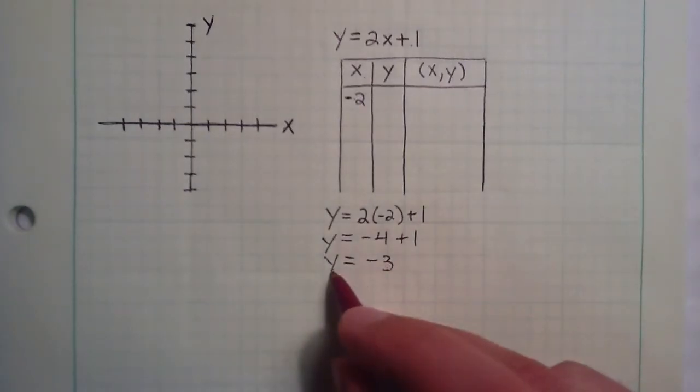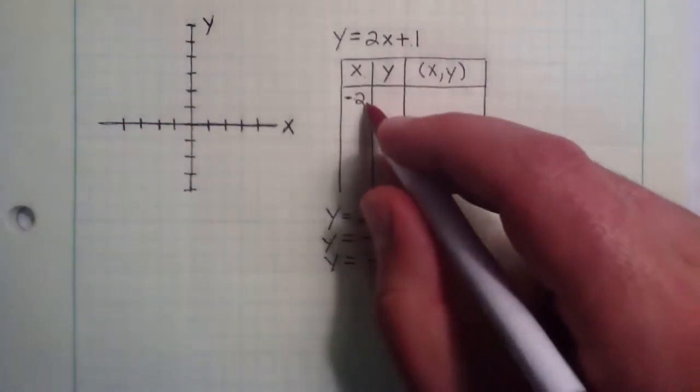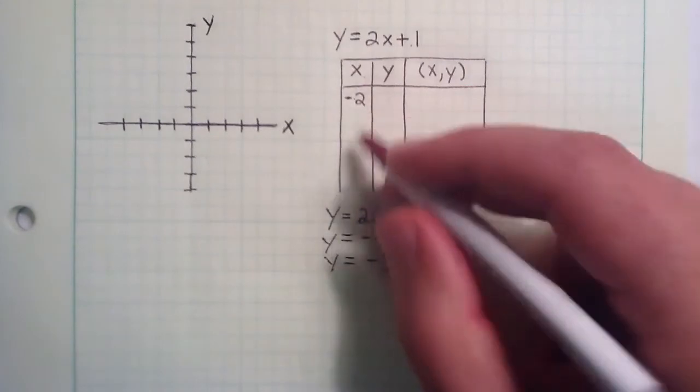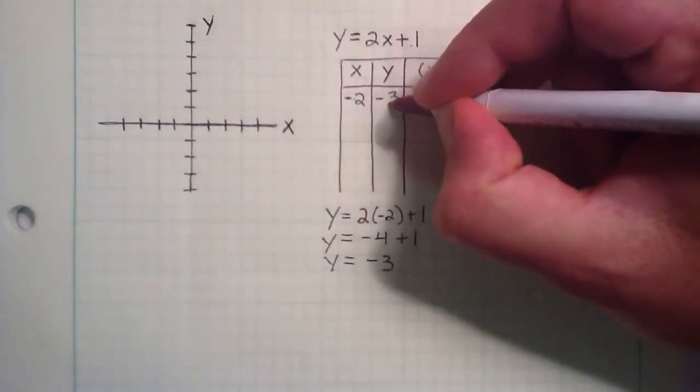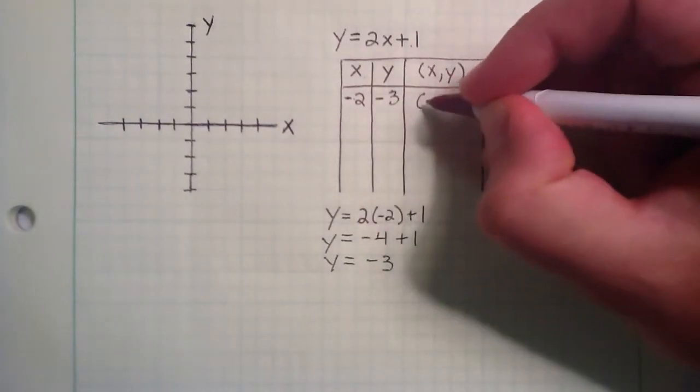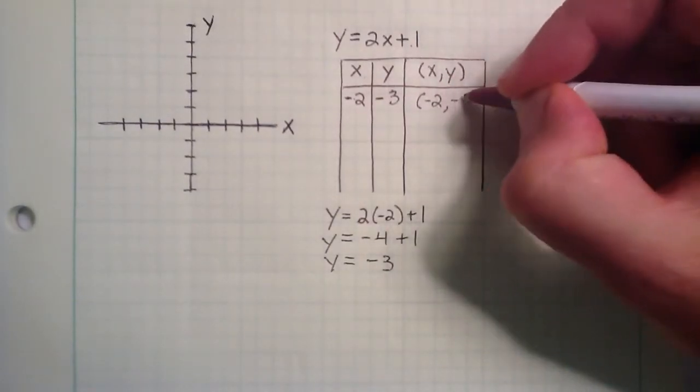So negative 3 is the y component that corresponds to the x component of negative 2. So we're going to go ahead and write this negative 3 right here. And putting both of these components together gives us the point negative 2, negative 3.